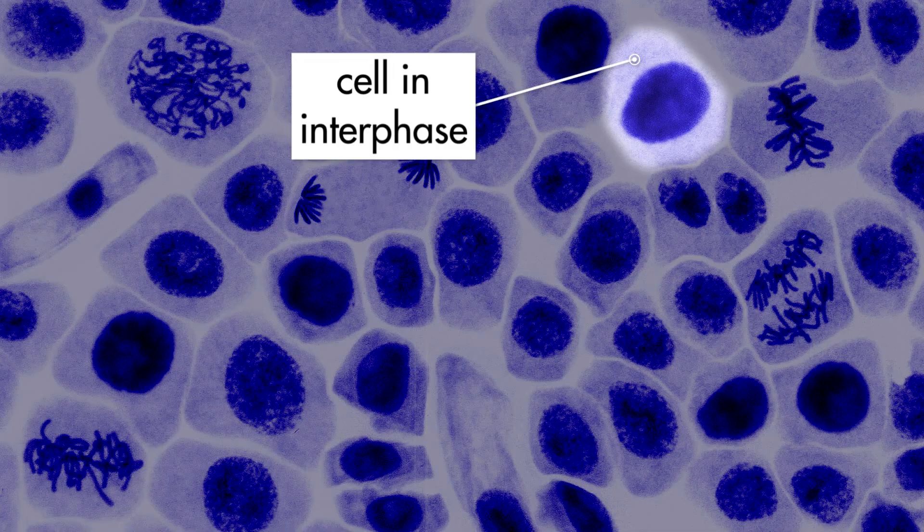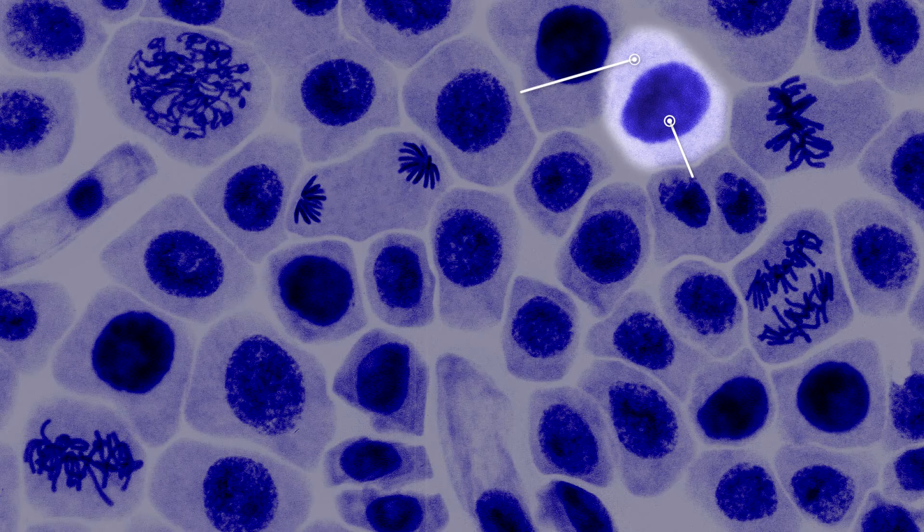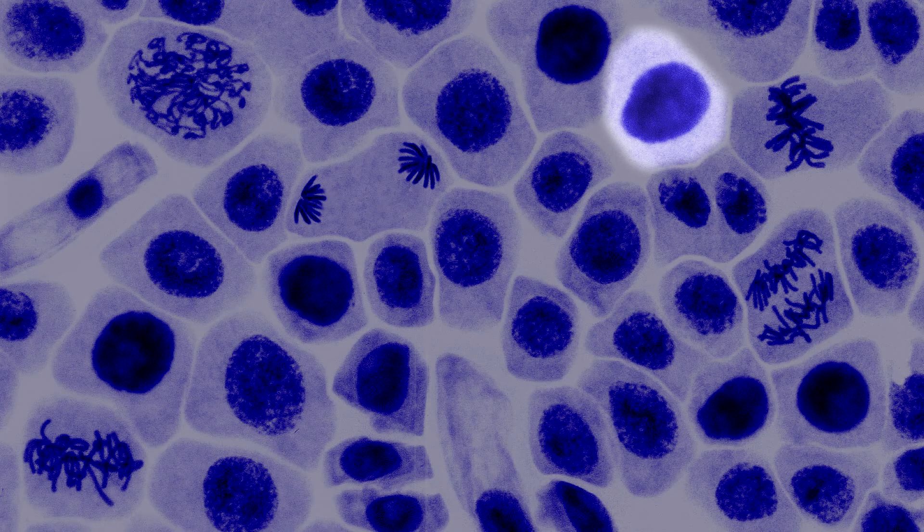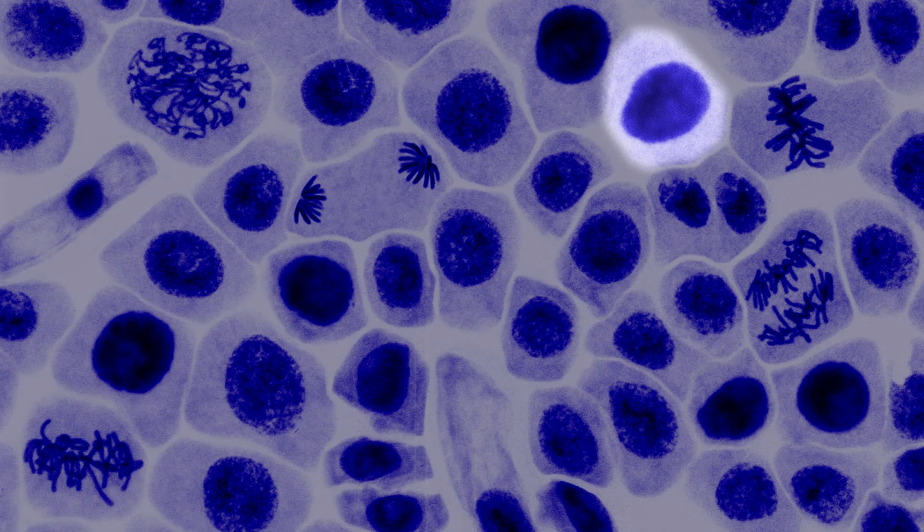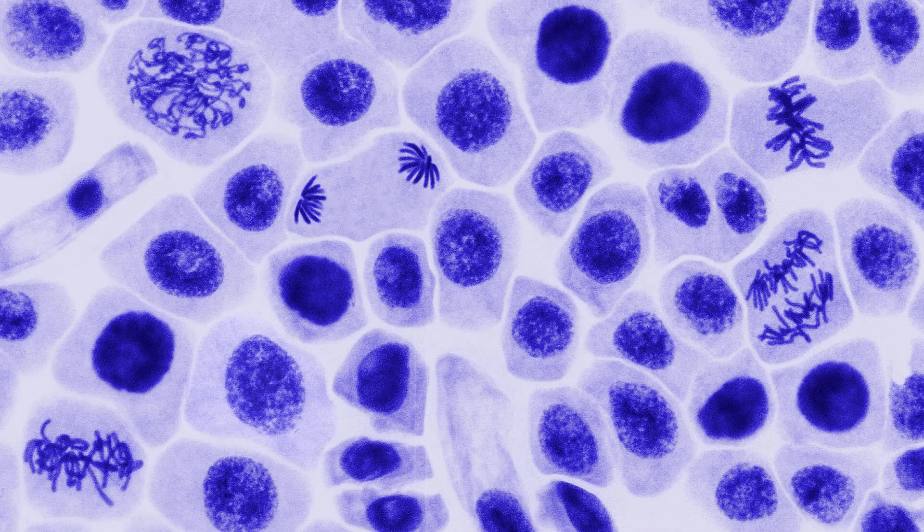During interphase, the nucleus of the cell appears to be a cloudy blue. The toluidine blue has stained the DNA, but the individual chromosomes are not yet visible because the chromosomes are spread out in long intertwined strands. Near the end of interphase, each chromosome in the cell's nucleus undergoes replication. Replication is the process by which a chromosome produces a duplicate of itself. Now that the chromosomes have replicated, the cell is ready to begin the first phase of mitosis called prophase.